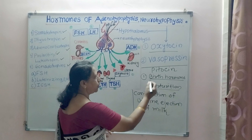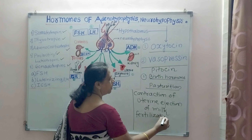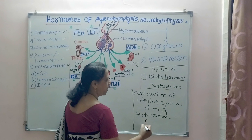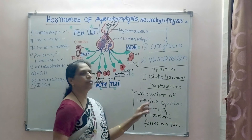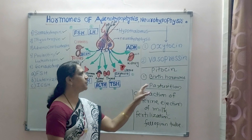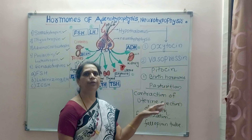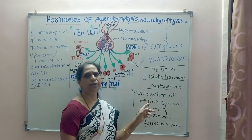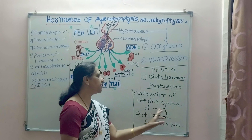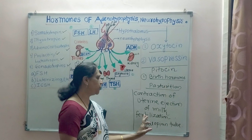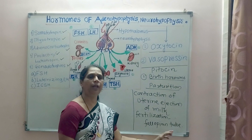Another important role of oxytocin is that it helps in fertilization — sperm passes into the fallopian tube due to the secretion of oxytocin. So oxytocin has three important roles: parturition (childbirth), contraction of uterine muscles, and ejection of milk as well as assisting fertilization by carrying sperms to the fallopian tube.